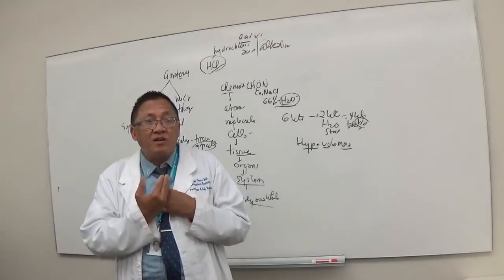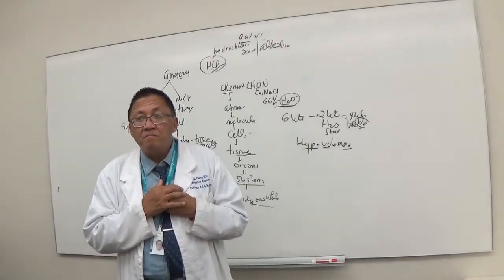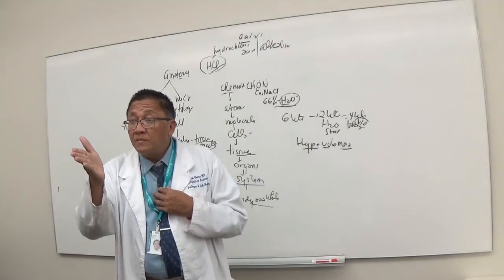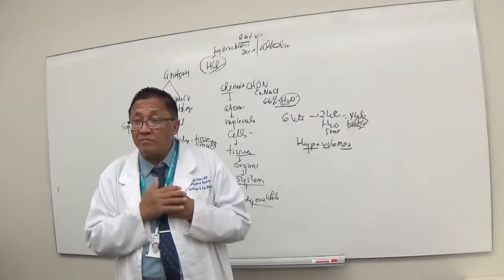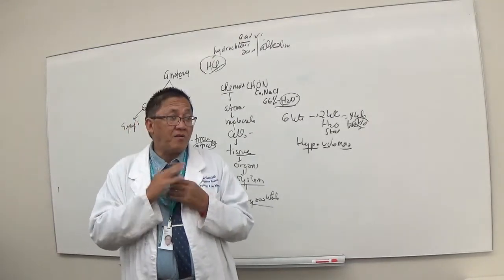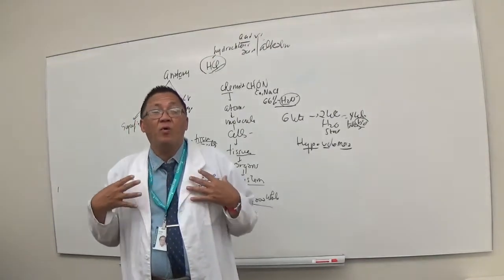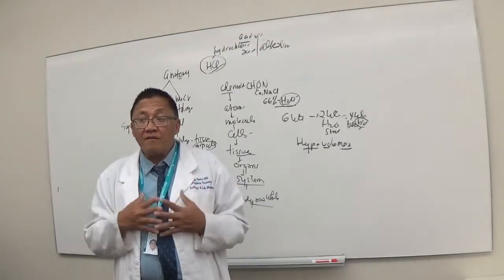The heart. The heart is inside what particular sub-cavity? Is it pericardial or pleural? Pericardial. Pericardial means around there. What about the lung? It's found in what cavity? Pleural cavity.